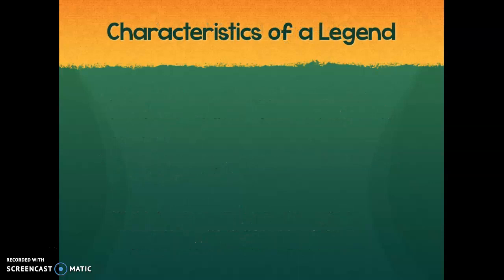What are some characteristics of a legend? Well, there are several, and we're going to be able to spot those in the legends that we're going to be reading this week. The first characteristic is that it always has a realistic setting from long ago. Remember, setting isn't just the place where a story takes place — it's also the time when it takes place. For a legend to be a legend, it always has to be set on this earth somewhere that actually exists or seems like it exists, and it has to happen a long time ago.